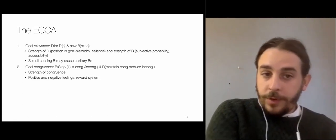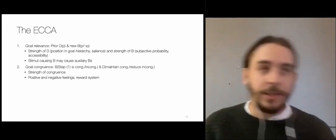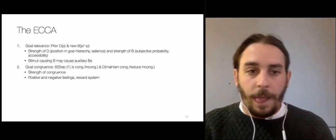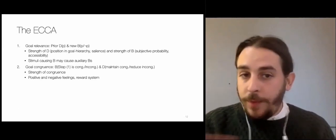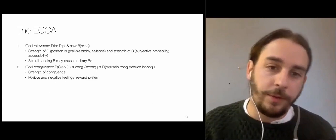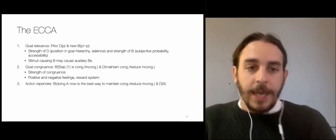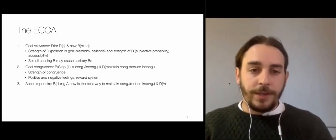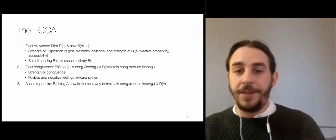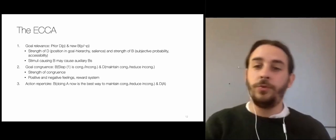This congruence or incongruence will cause — or may cause — positive and negative feelings and will also activate the reward system. Perhaps the congruence or incongruence is not strong enough and so won't cause a noticeable positive or negative feeling. The third and last BD pair is about the action repertoire and the action tendency. You have a belief that doing action A now is the best way to maintain the congruence or to reduce the incongruence, and this comes with the desire to do A.